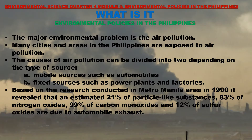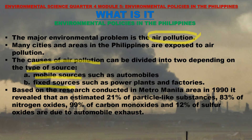The major environmental problem in the Philippines is air pollution. The causes of air pollution can be divided into two types: A) mobile sources such as automobiles, and B) fixed sources such as power plants and factories. Based on research conducted in Metro Manila in 1990, an estimated 21% of particle-like substances, 83% of nitrogen oxides, 99% of carbon monoxides, and 12% of sulfur oxides are due to automobile exhaust. According to the 2019 World Air Quality Report, the Philippines holds the 57th place among countries with the worst air quality, but ranks as the country with the lowest pollutant levels amongst Southeast Asian countries.